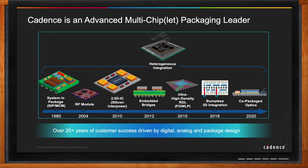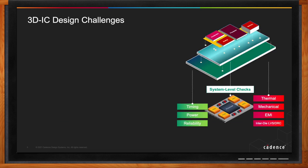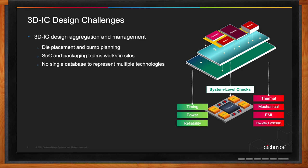First of all, you have to plan and design the whole 3D stack in terms of the positions and what goes on top — whether it's face-to-face, face-to-back, what kind of stacking are you defining. You have to do design aggregation at the top level. You have to make sure that the bump connections going from one die to the other are all aligned and follow certain physical as well as electrical rules set by the foundry.